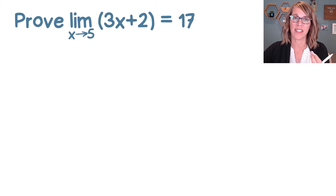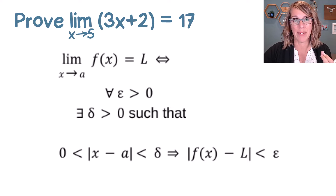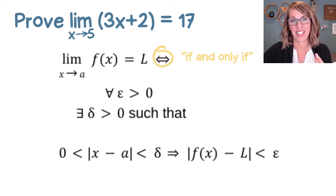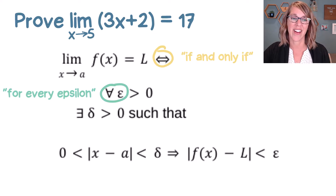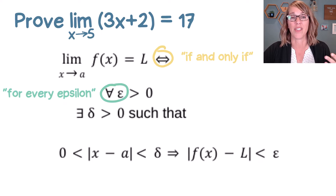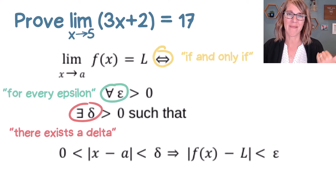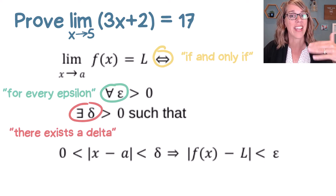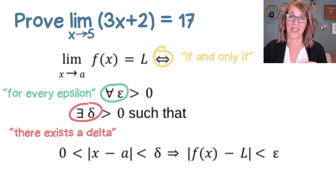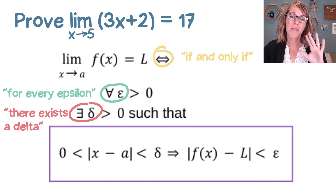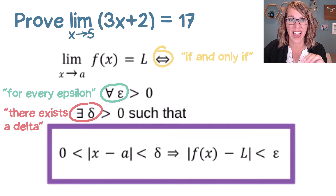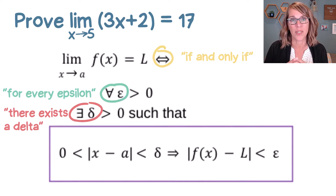To prove this limit, we need the definition of a limit. The double arrow means 'if and only if.' The upside-down A means 'for every' — so it doesn't matter what your epsilon value is, and epsilon happens to be your distance in the y direction. The backwards E means 'there exists' — we're going to find an appropriate delta value. The most important piece is the conditional statement at the bottom, which is your roadmap for doing these proofs.